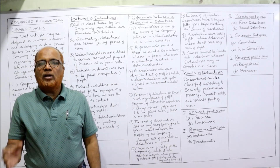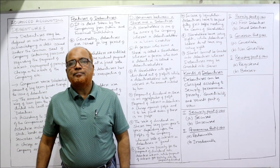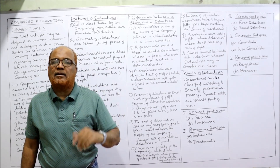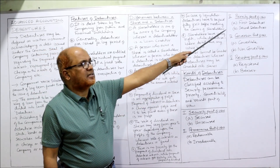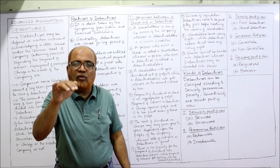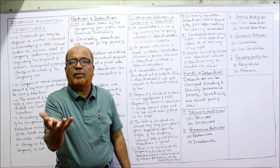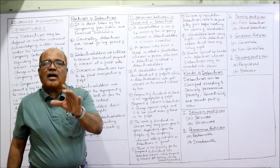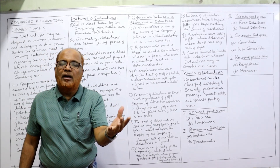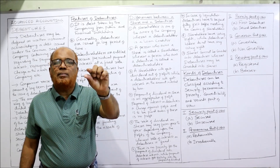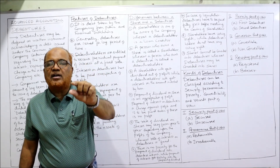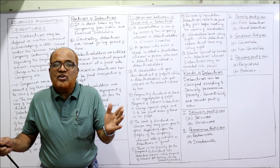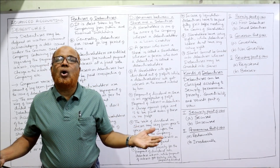On the basis of priority: first debentures and second debentures. Whenever the company pays interest or repays capital, it is done first to first debenture holders; only after making payment to first debenture holders, if the amount remains, will it be paid to second debenture holders. On the basis of conversion: convertible debentures and non-convertible debentures. Convertible debentures have a provision that they can be converted into shares after a period of time; if no such provision is given, they are called non-convertible debentures.